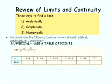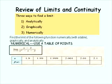Let's begin by finding the limit of the following function numerically — that means with a table — graphically, and analytically. For the numerical approach, we use a table of points. Our function is the limit as x approaches 2 of x minus 2 over x squared minus x minus 2.